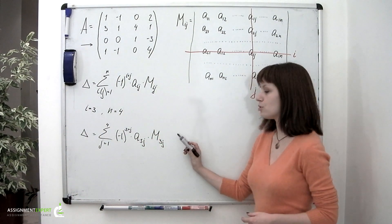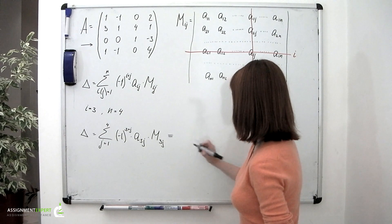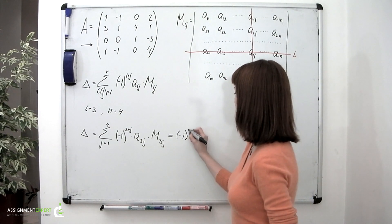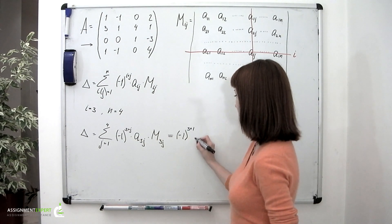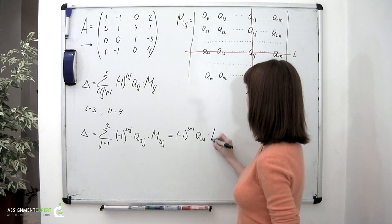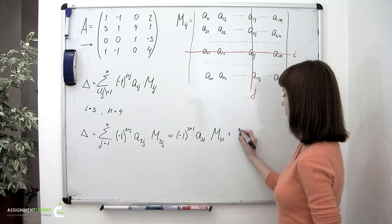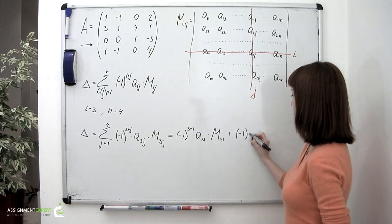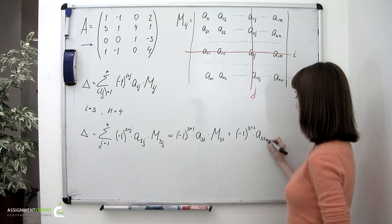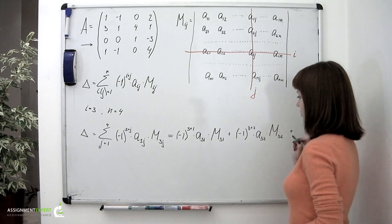Now let's substitute the values of j into this formula. We get: negative 1 raised to the power of 3 plus 1, times a sub 3,1 times m sub 3,1, plus negative 1 raised to the power of 3 plus 2, times a sub 3,2 times m sub 3,2, plus further terms for j equals 3 and j equals 4.